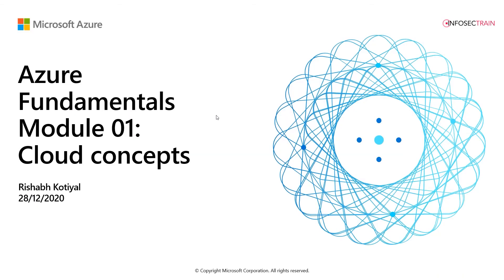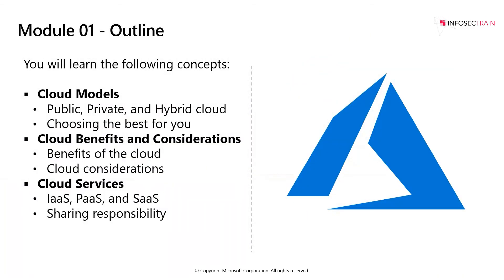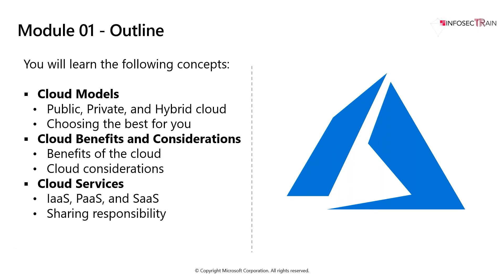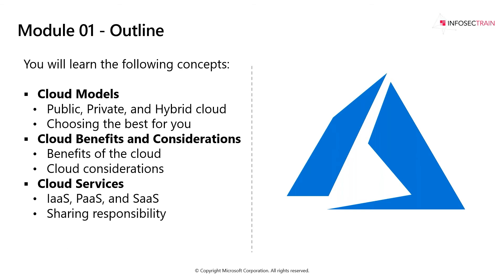This is module one: cloud concepts. In this module we are going to learn about cloud models — public, private, and hybrid deployment types. We'll also talk about the benefits of cloud, key considerations, and cloud services like IaaS (Infrastructure as a Service), PaaS (Platform as a Service), and SaaS (Software as a Service), along with many other things. This is the module outline for today.